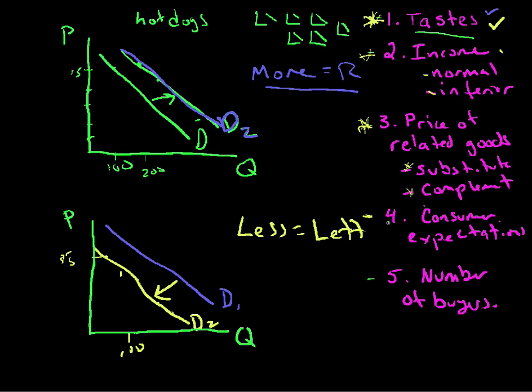Consumer expectations. This is a fun one, tricky though. If I expect hot dogs tomorrow to be $400 a hot dog, what am I going to do today? You got it. I'm going to buy a lot of hot dogs because they're cheap. They're only $5 today, for example, maybe. So my demand shifts to the right if I expect hot dog prices to go up in the future. How about my demand for hot dogs today if I expect hot dog prices to go down in the future? I'm going to wait. Buy my hot dogs tomorrow. So my demand for hot dogs today shifts to the left. Less. Expectations. Expectations of future prices.